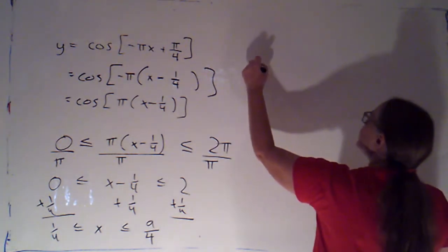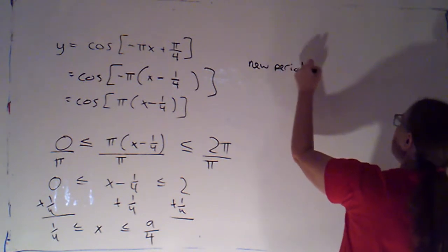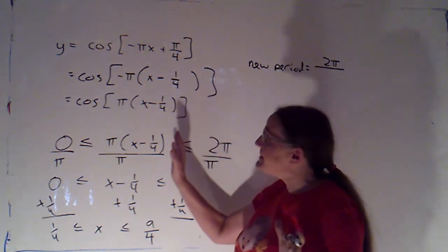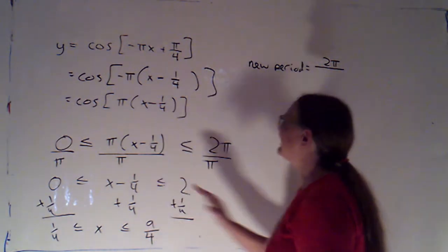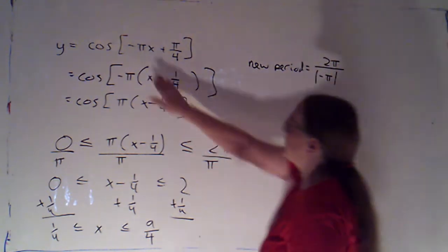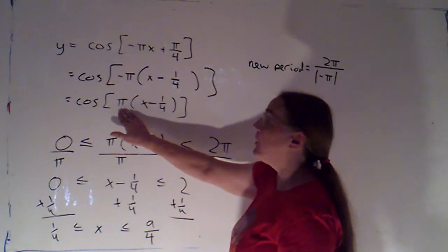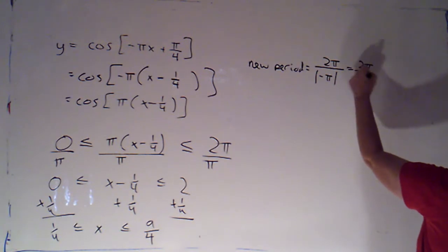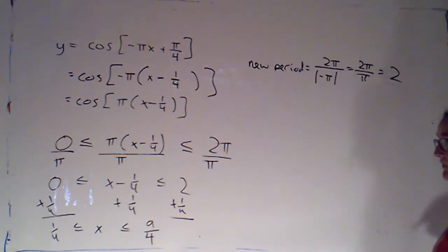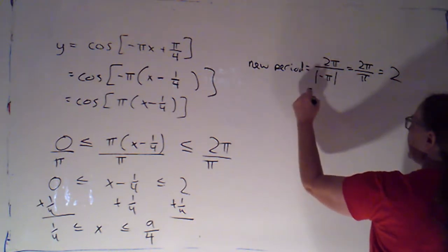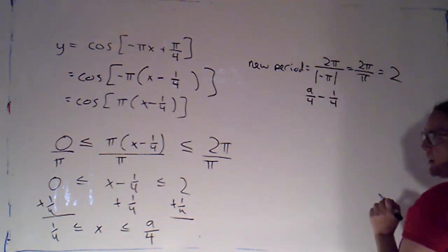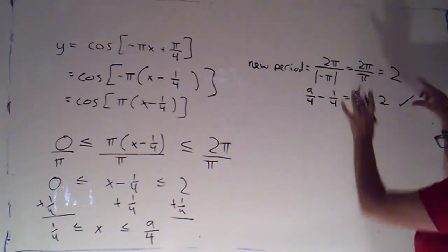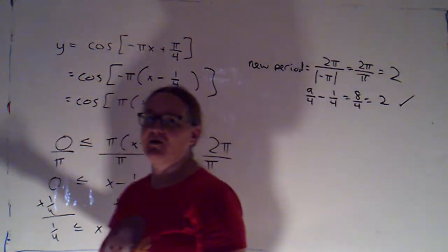So, let's write down what our new period is. I know that should be the original period of 2 pi divided by the absolute value of whatever I'm multiplying by x. It doesn't matter whether I look here and take the negative pi, or look here and take the negative pi, or look here and take the pi, because they all have the same absolute value. The absolute value is pi, so the period should be 2. Let's do a quick check. Ending point of 9 fourths minus starting point of 1 fourth is 8 fourths, which is 2. That checks. So, two ways to calculate the period, and they agree. I'm feeling confident. Excellent.